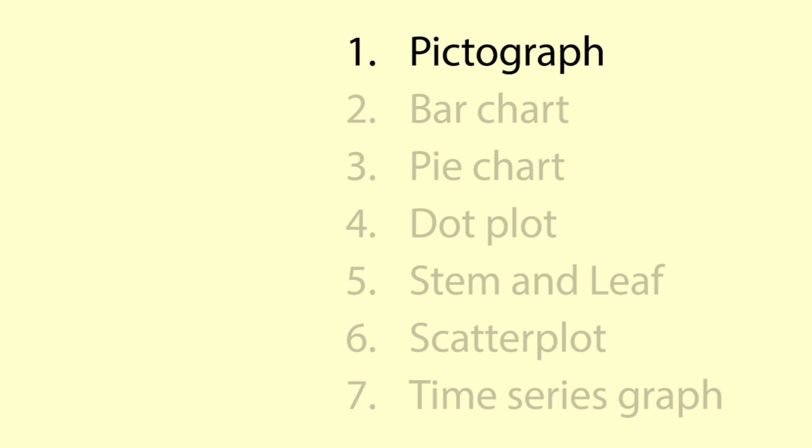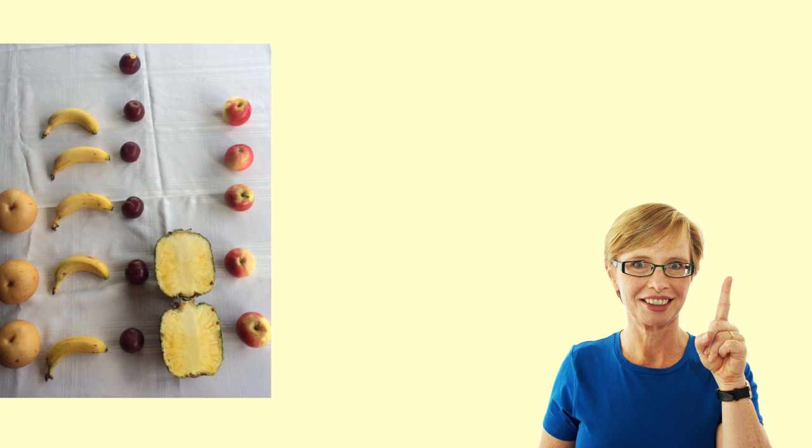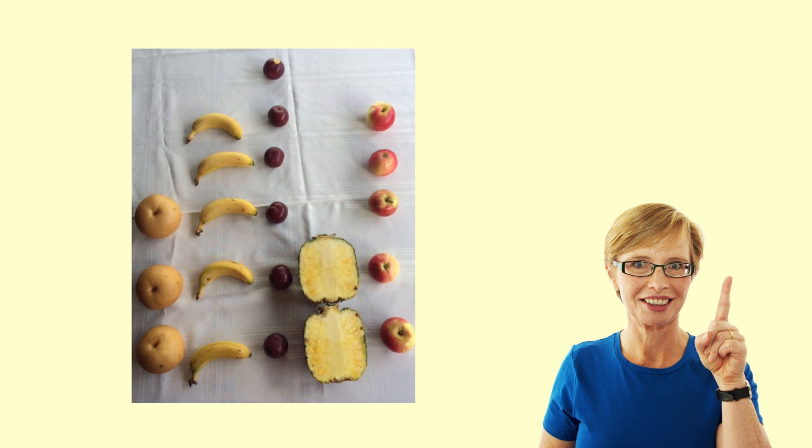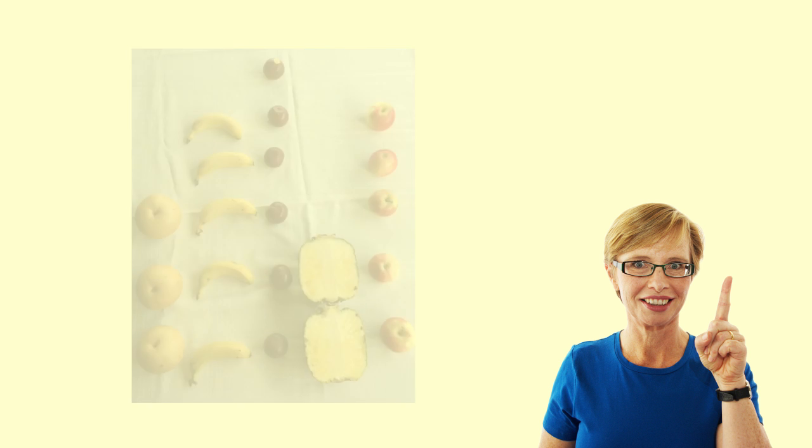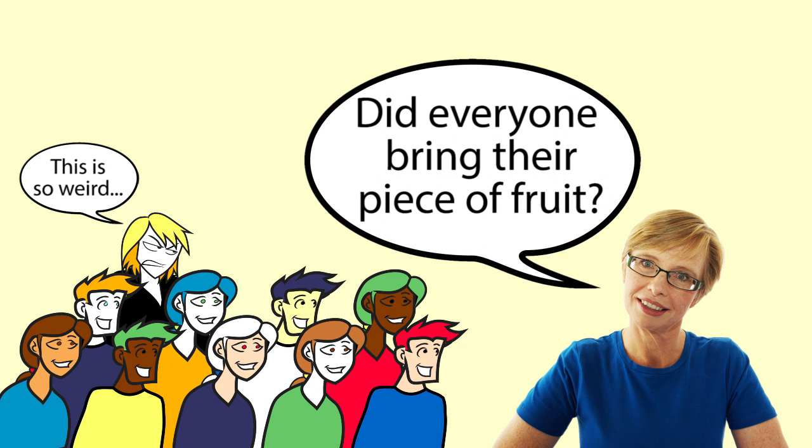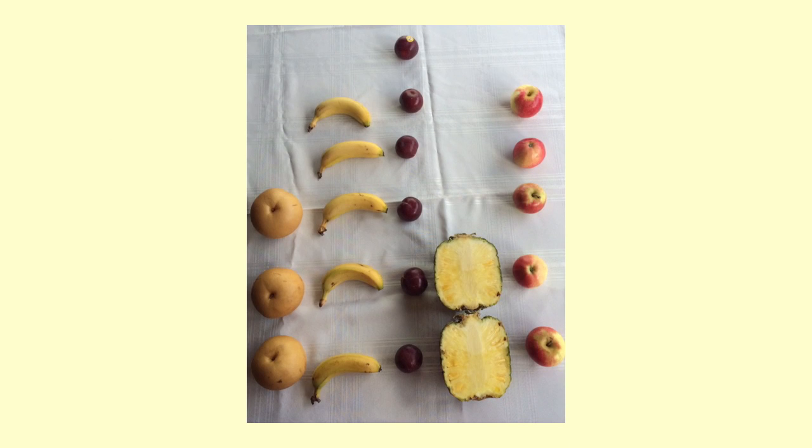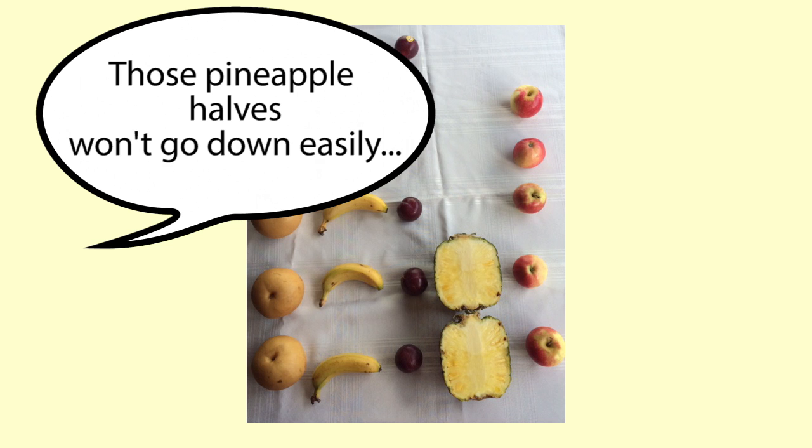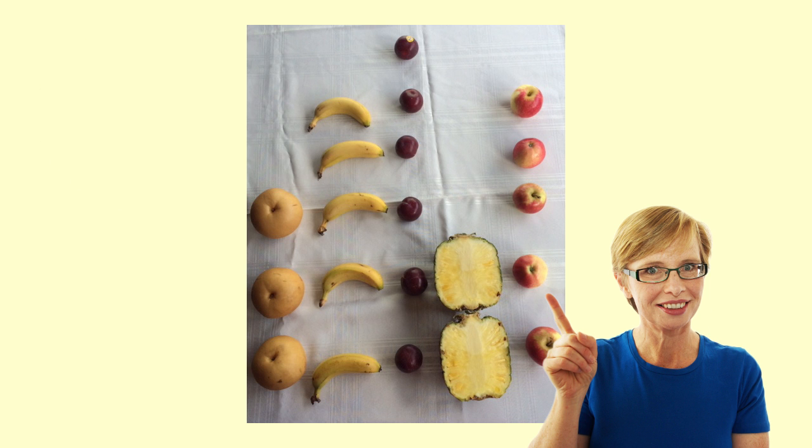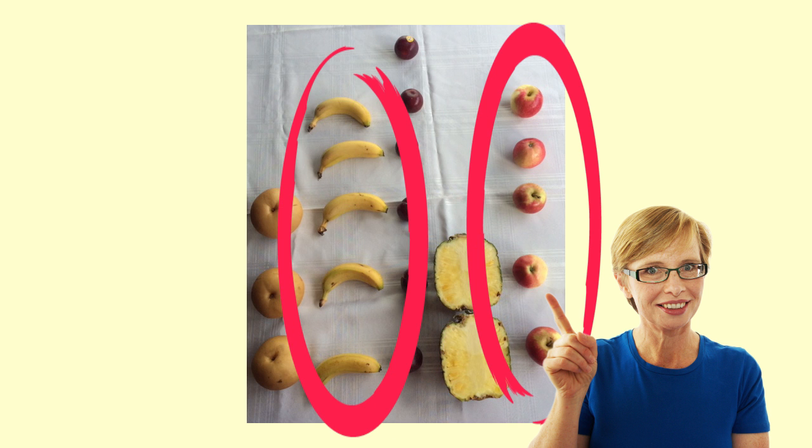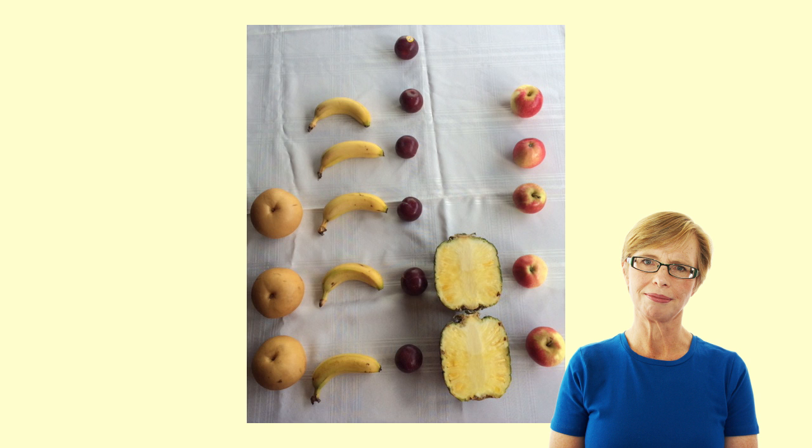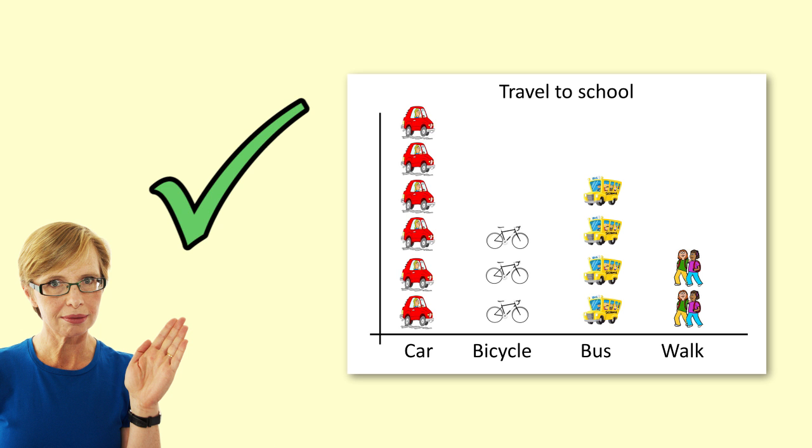Pictograph. The simplest form of graph involves lining actual objects up in rows according to characteristics. For example, we may be interested in what fruit students bring for a class fruit salad. We can line the pieces of fruit up on a table according to type. It makes it possible to answer questions like, what is the most popular fruit for a fruit salad? And have people brought more bananas than apples? It's fun to use real objects, but mostly in pictographs we use pictures of the objects. These pictures should make sense with the context.